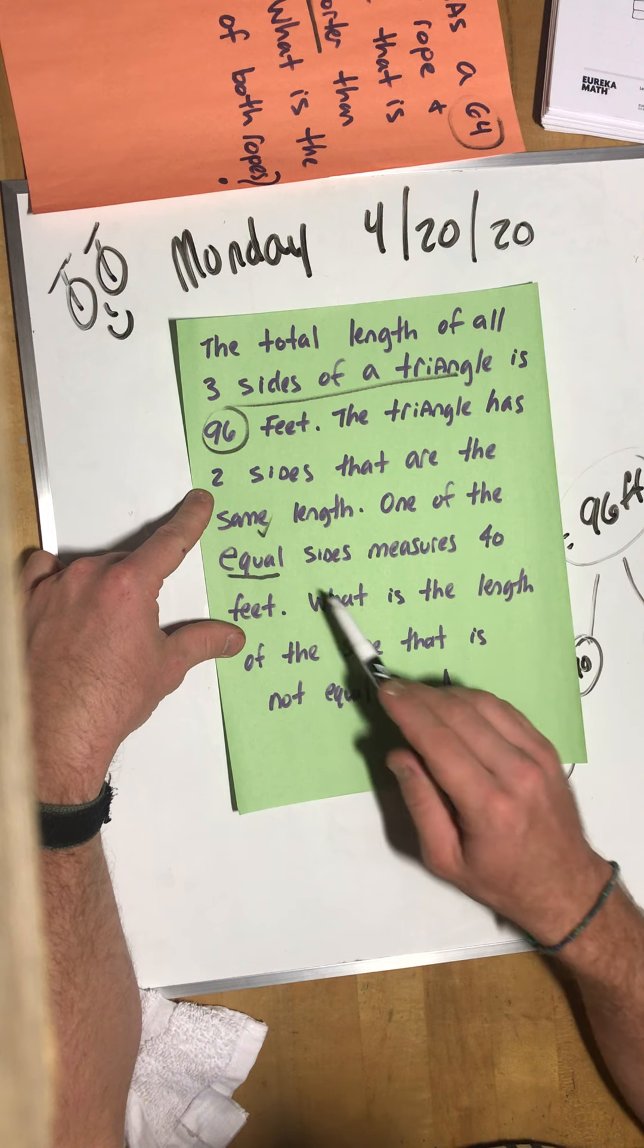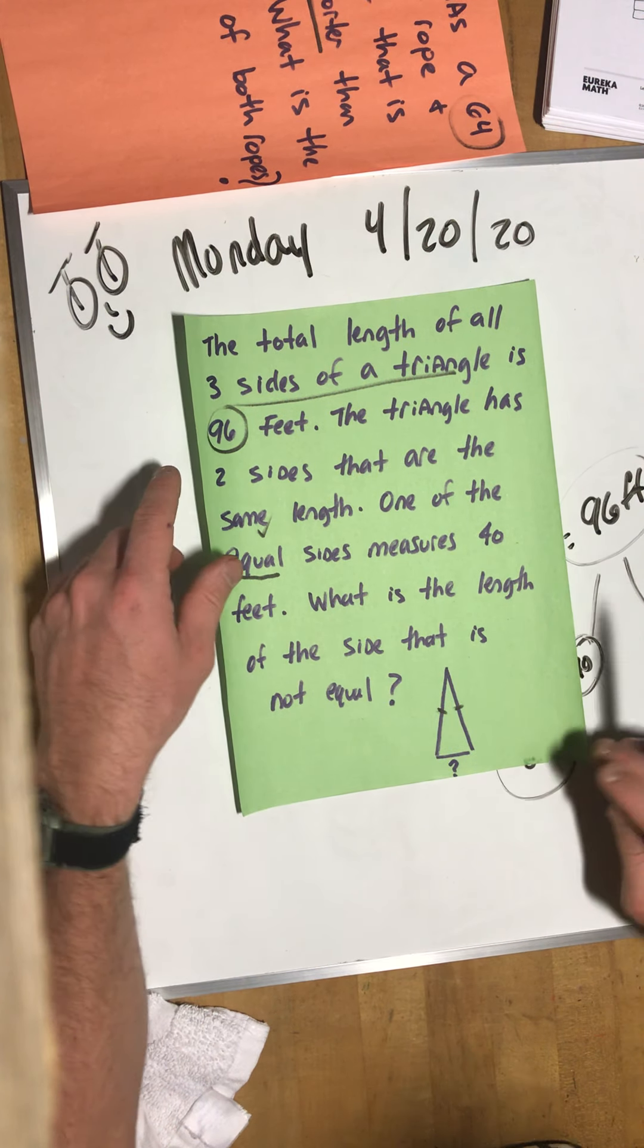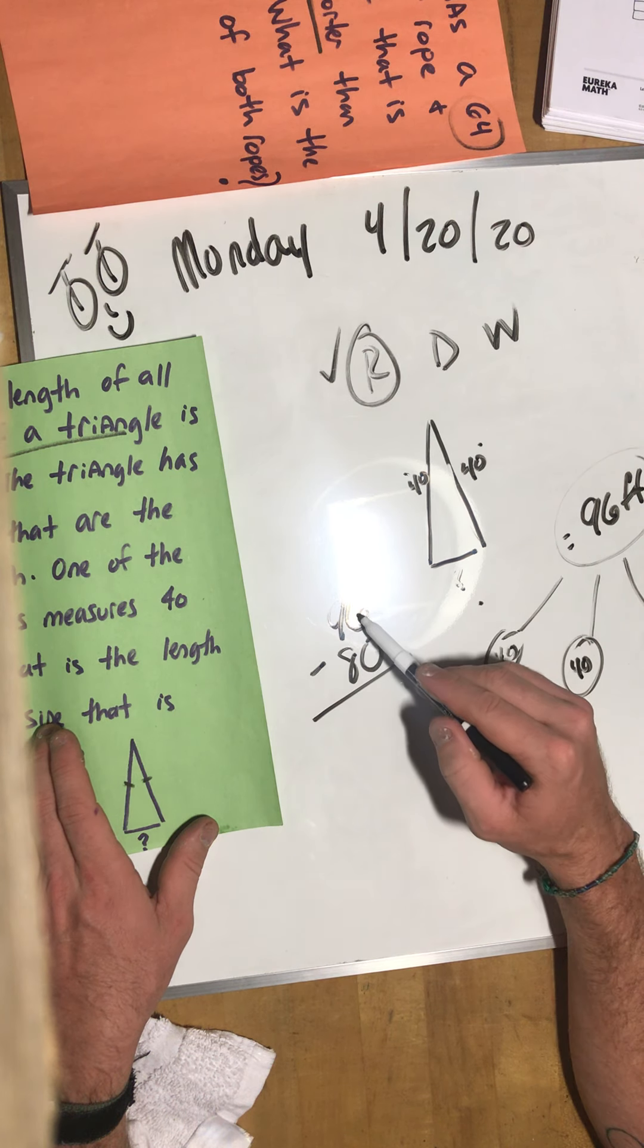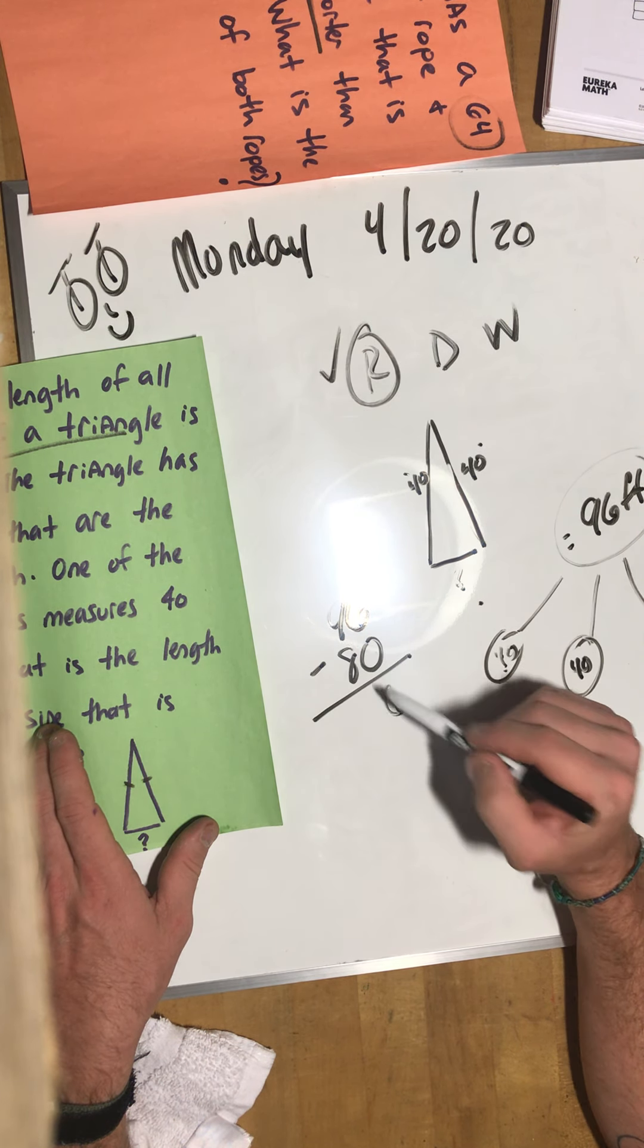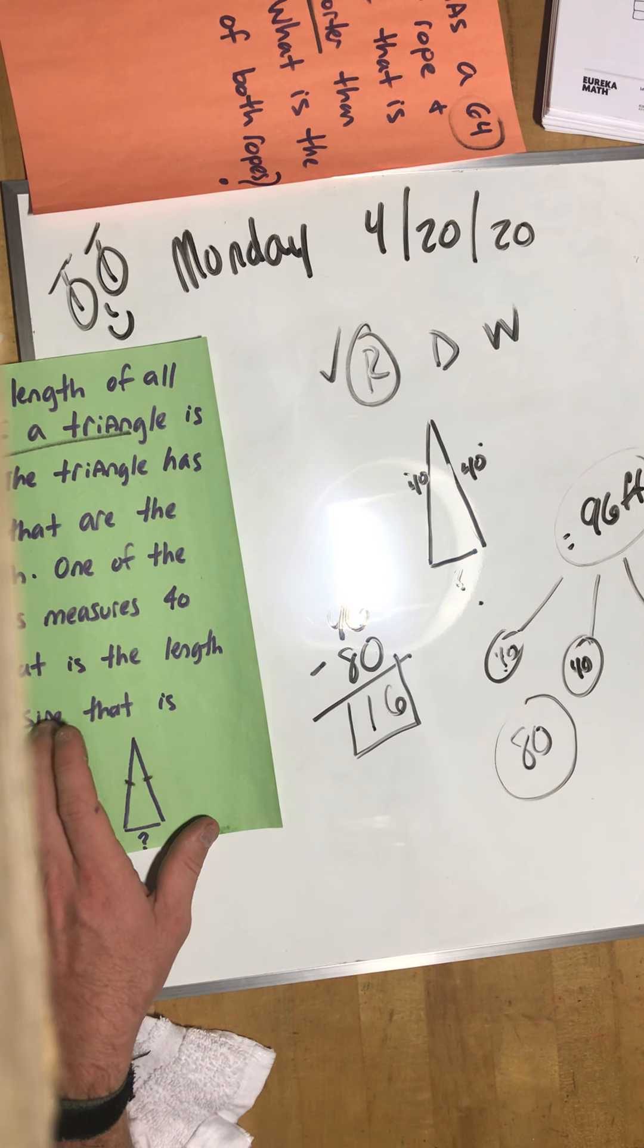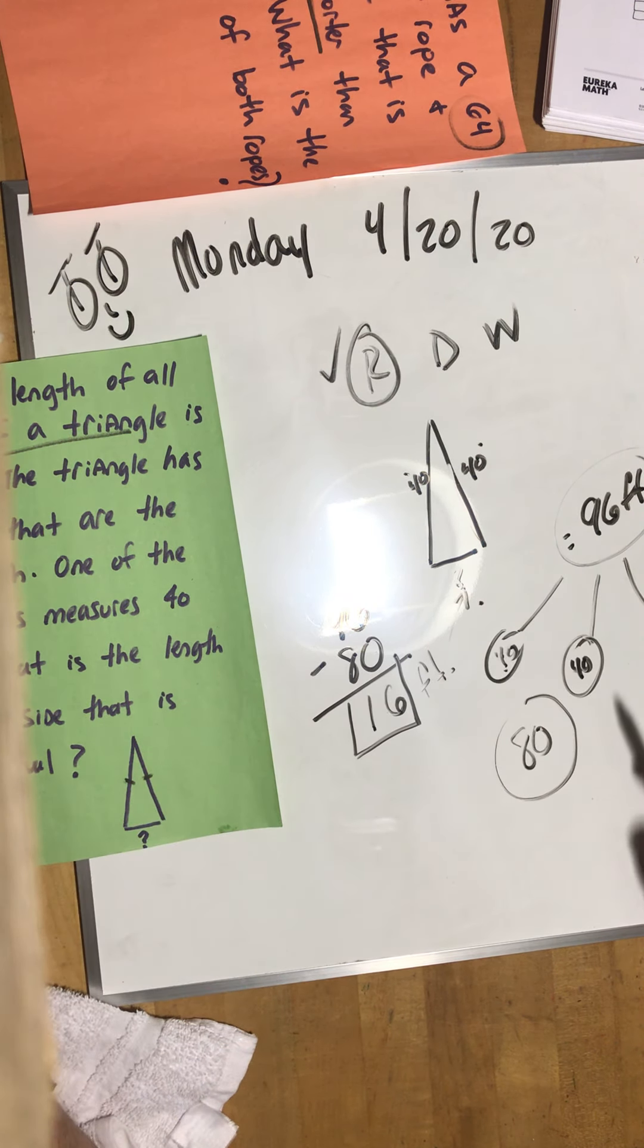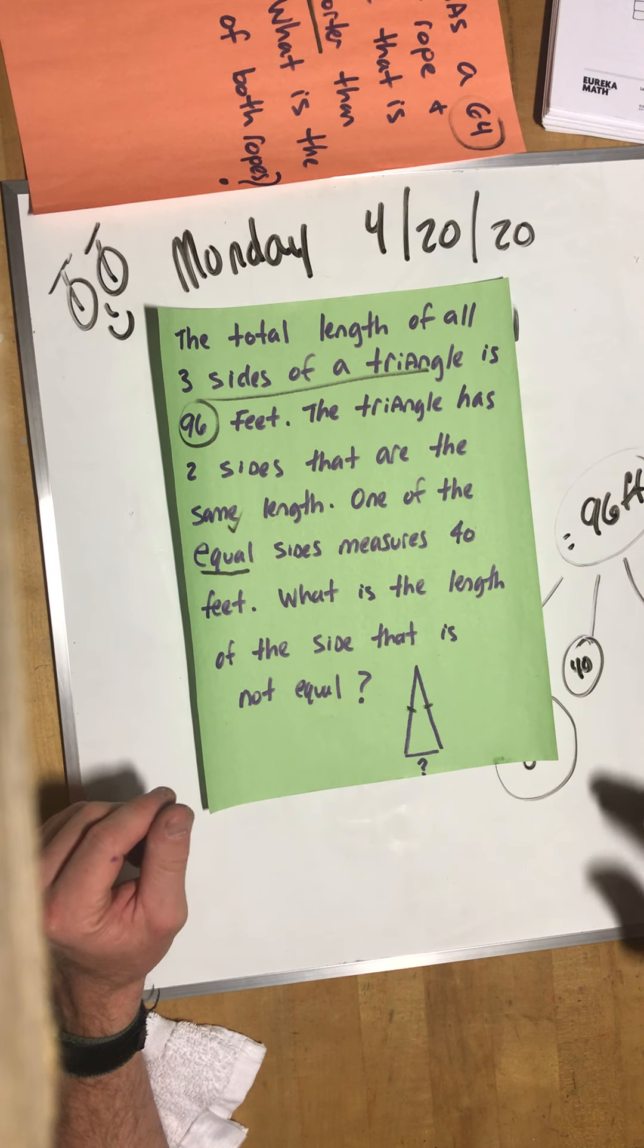Double check: 96 feet, three sides of a triangle. The triangle has two sides that are the same length. We found that out. One equal measure of 40 feet. What is the length of the side that is not equal? Exactly. 96 minus 80. Let's go ahead and take it down. 6 take away 0 is 6. 9 take away 8 is 1. 16 feet is our answer.